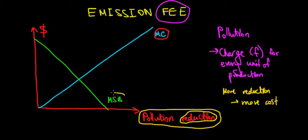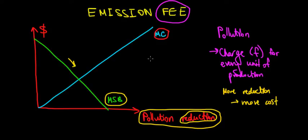Why is the marginal social benefit decreasing? Think about the simple diminishing returns example from regular microeconomics. Whenever we eat the first apple, we get some health benefits, but when we eat the second, third, fourth apple, the health benefits are diminishing. The same intuition goes here.